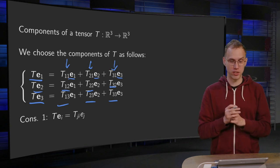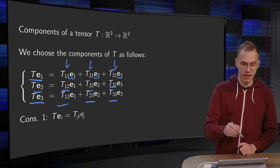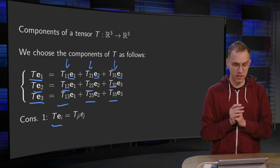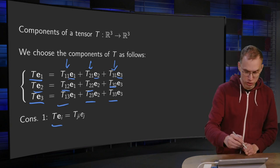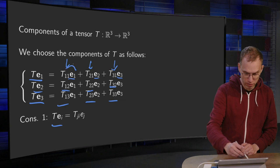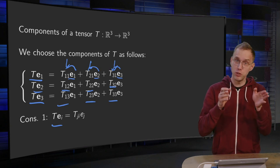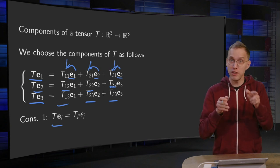A consequence of the choice, you can see it already, is that the T of EI... So what you basically have is that you sum here over the first component. So you have T11 E1, T21 E2, T31 E3.